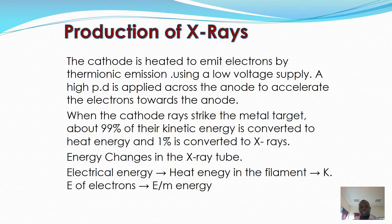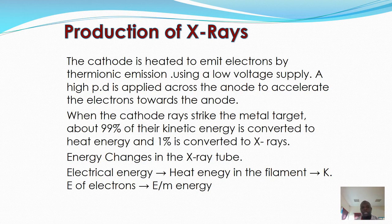In the production of X-rays, the cathode is heated to emit electrons by the process of thermionic emission using a low voltage supply. A high potential difference is applied across the anode to accelerate the electrons towards it. When the cathode rays strike the metal target, about 99% of their kinetic energy is converted to heat energy and only 1% is converted to X-rays.